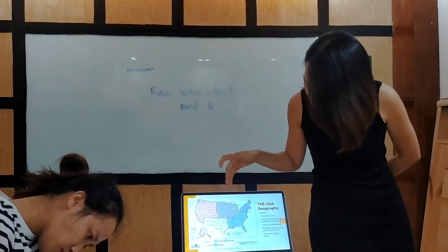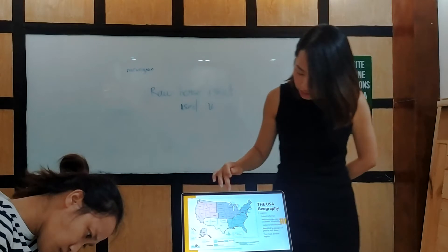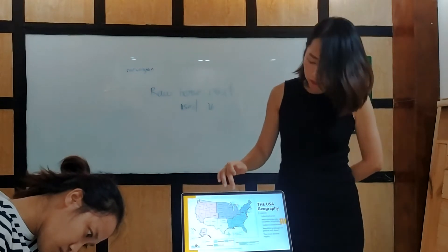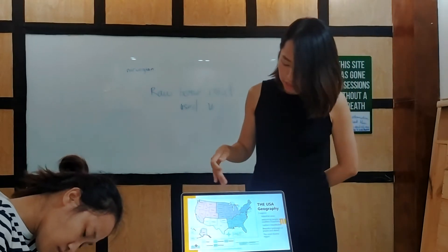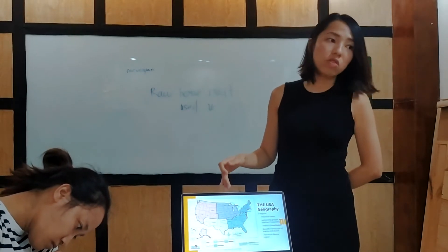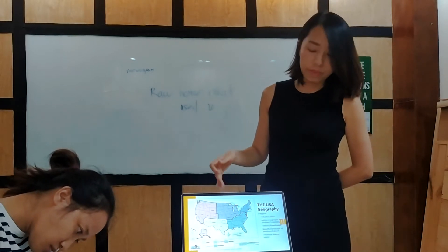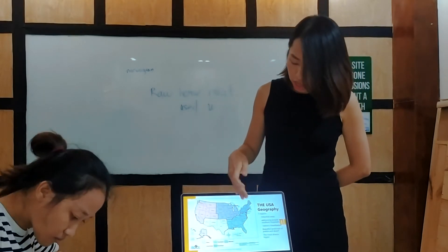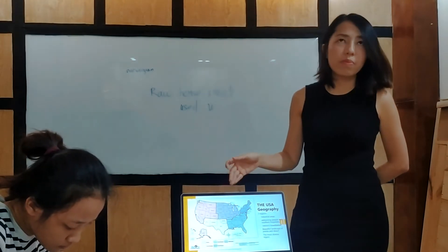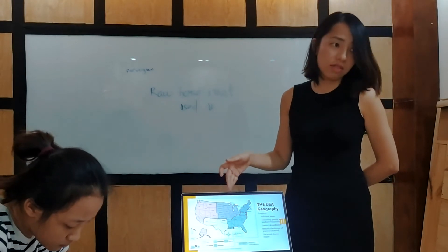The next one I want to mention is the purple color here — this is the Midwest. This is the home to the agricultural base of America, and it's what is called the nation's breadbasket.